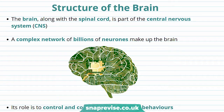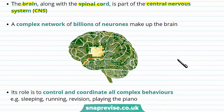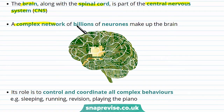The brain is one of the most important organs in your body. It processes a lot of information and helps you produce an appropriate response. The brain, along with the spinal cord, is part of the central nervous system, or CNS, and the brain is made up of a complex network of billions of neurons.